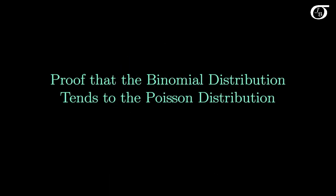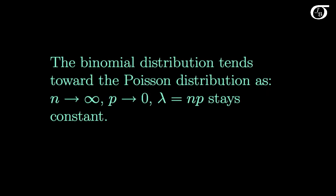Let's take a look at a proof that the binomial distribution tends to the Poisson distribution. The binomial distribution tends toward the Poisson distribution as n gets very large and goes off toward infinity, as lambda, which equals n times p, stays constant, and p goes to zero. So the Poisson distribution can be used as an approximation to the binomial distribution for large n and small p.